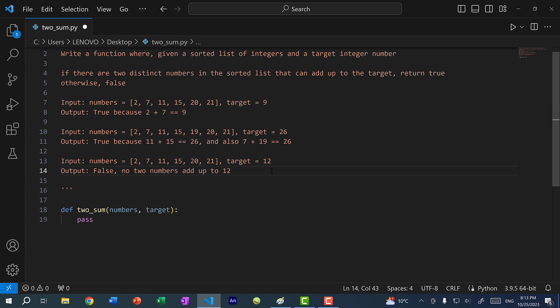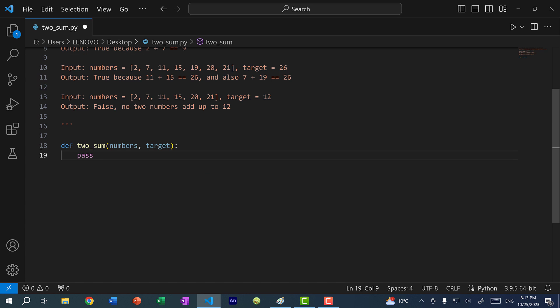For this third example, the target is 12 and your function should return false because there are no two numbers in this list where if you add them up, there are no two numbers that will equal to 12. So just take a moment and write out your solution, and we'll come back and analyze that solution.